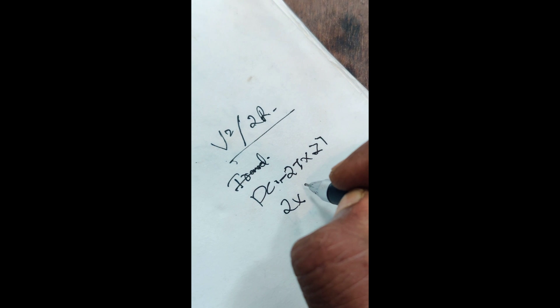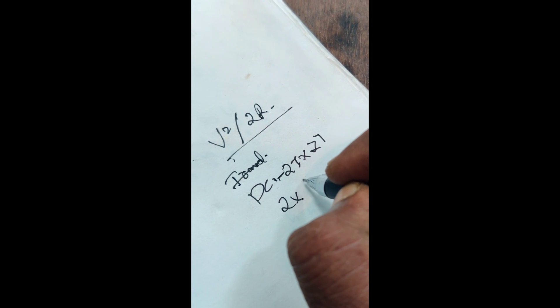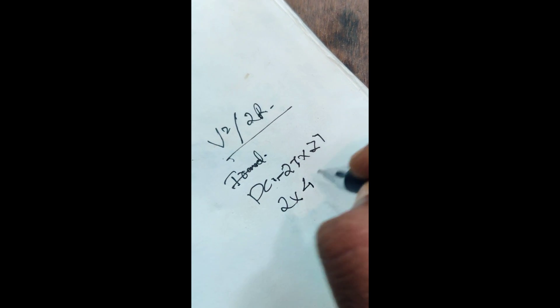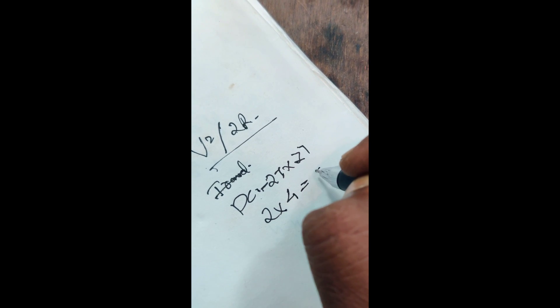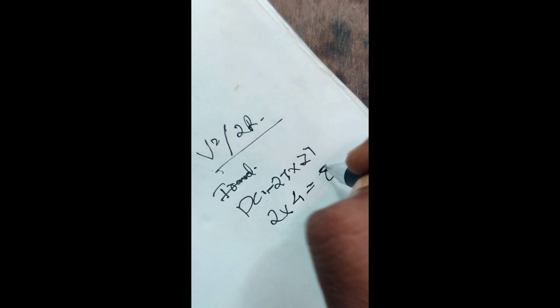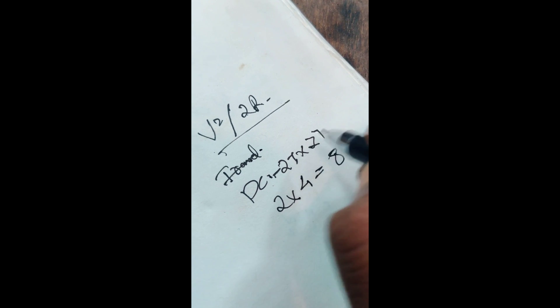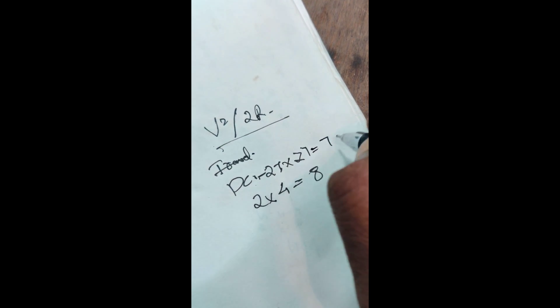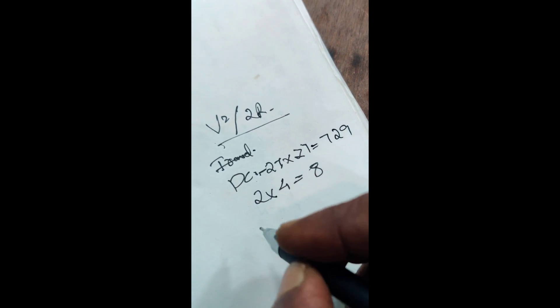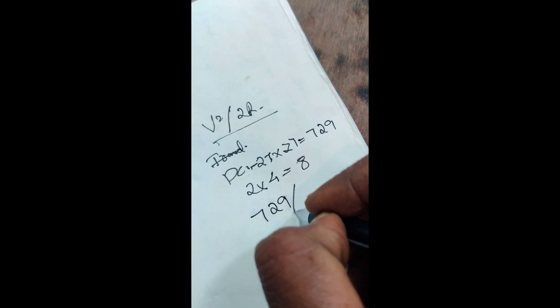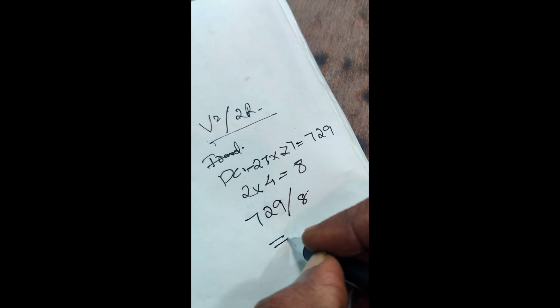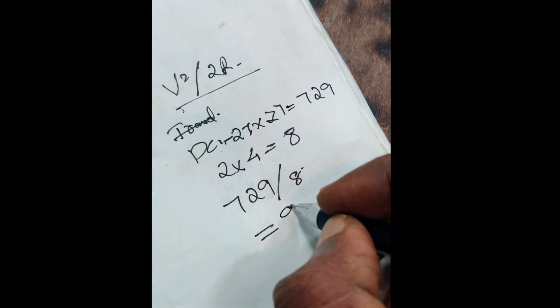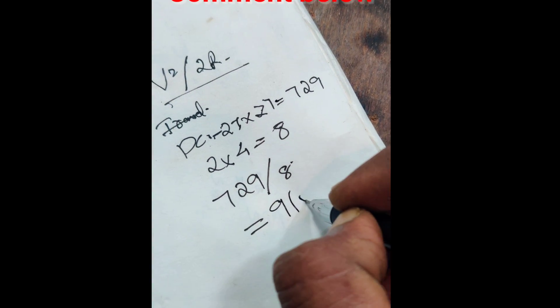The speaker load is 4 ohms. This is 4, and 27 is 27. 27 squared is 729 by 8. This gives us 91 watts.